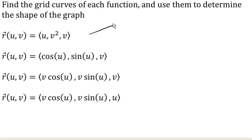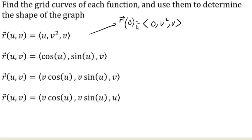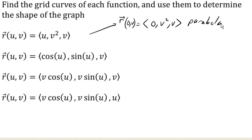For example, if I let u be constant, say 0, then I would get (0, v², v). Now this is going to describe a parametric curve, or a space curve, because now it's only a function of one variable. My x value is constant, and my y value equals z squared — this is giving me a parabola at an x value of 0.